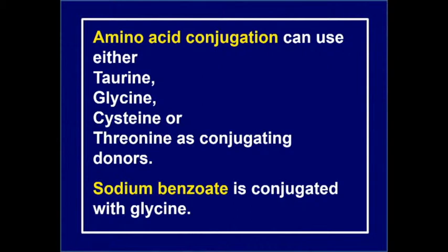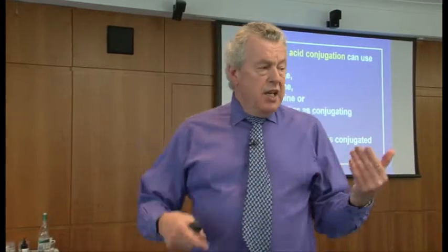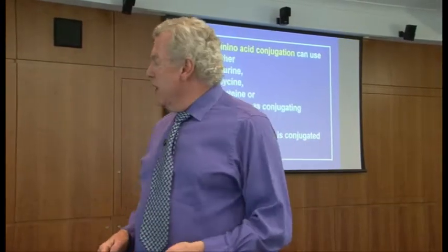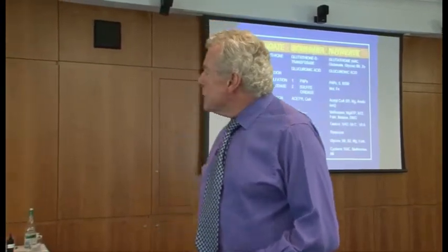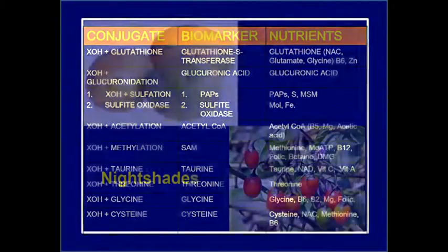Lastly, you can conjugate with amino acids like taurine, glycine, and cysteine. For example, sodium benzoate — a food preservative — is conjugated primarily by glycine, and we use sodium benzoate as the marker for glycine defects. Each of the phase two conjugators has specific nutrients and foods you might suggest where there's a blockage in that pathway.